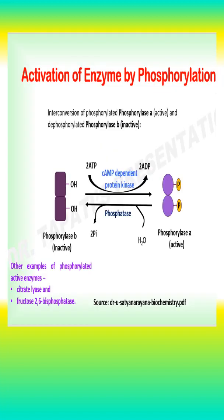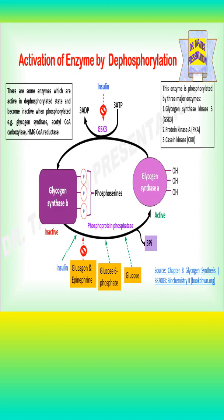There are few enzymes which are activated by the phosphorylation process, like phosphorylase, citrate lyase, and fructose-2,6-bisphosphatase. Whereas few enzymes are deactivated by phosphorylation and activated by dephosphorylation, like lipid synthase, acetyl-CoA carboxylase, and HMG-CoA reductase.